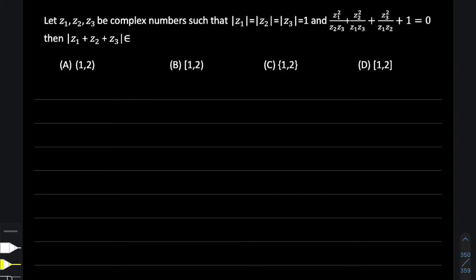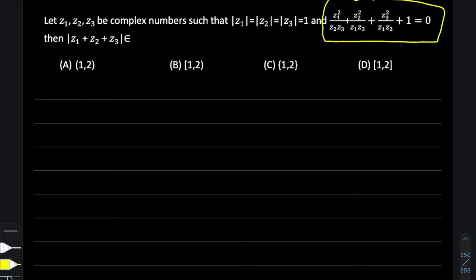We have three complex numbers z1, z2, z3 such that |z1| = |z2| = |z3| = 1, so all three complex numbers are unimodular. Apart from that, we have also been provided with one more piece of information, right now on your screen which I am circling in yellow. We have to find the interval in which |z1 + z2 + z3| lies.